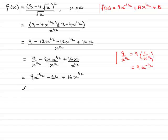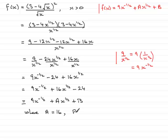And if I rearrange this equation here, we've got 9x^(-1/2), but the 16x^(1/2) is the next term. And then -24. And you can see this compares now to 9x^(-1/2) + Ax^(1/2) + B. Notice how I've written the identical sign here. And we can now say where A is clearly the 16, and B is equal to the -24.